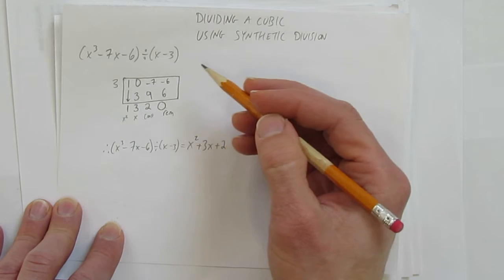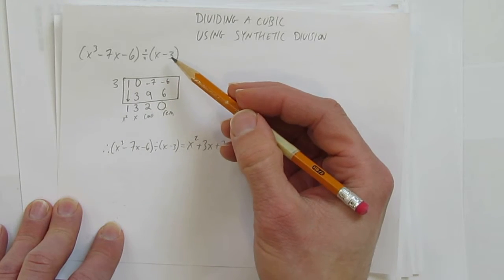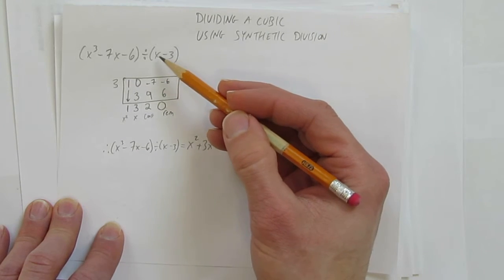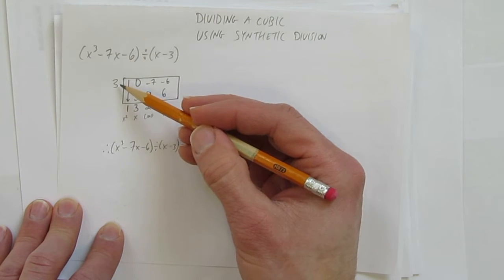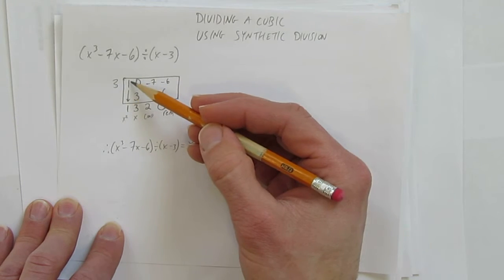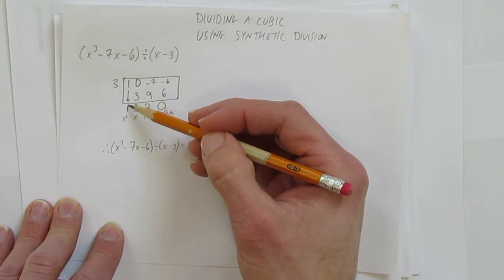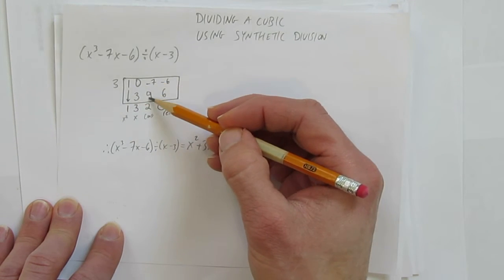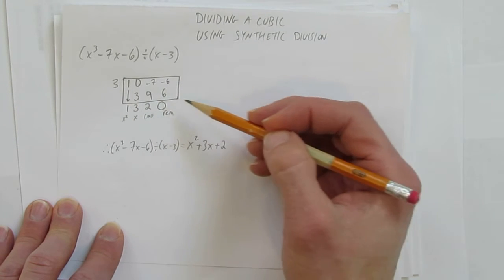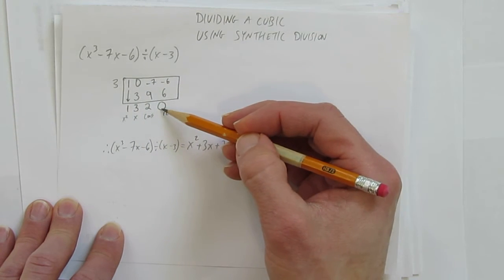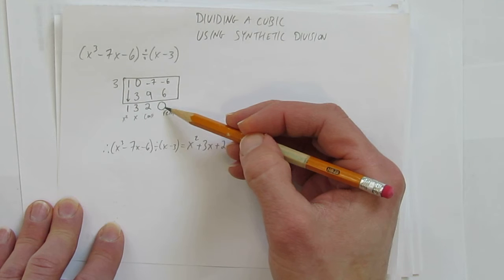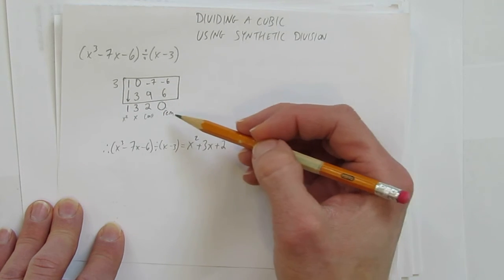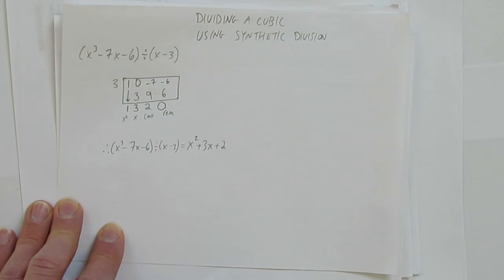So when you're doing synthetic division, all you do is take the zero corresponding with the factor, put it in front, bring that first coefficient down, and from there it's multiply, add, multiply, add, multiply, add. And then finally, make sure when you read your result, remember that the very rightmost number is in fact your remainder. And that's it. We've divided a cubic using synthetic division.